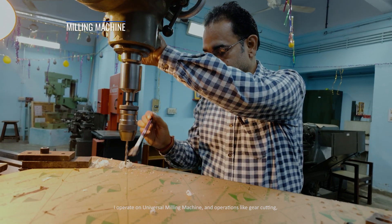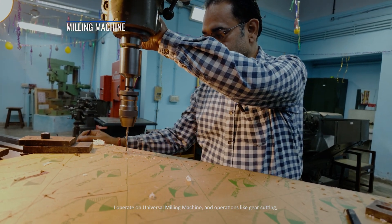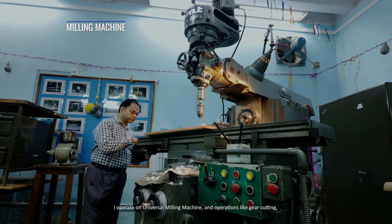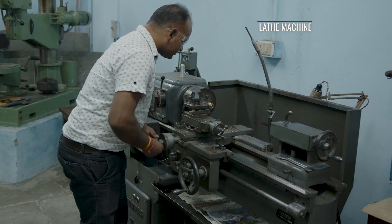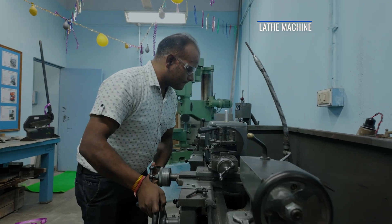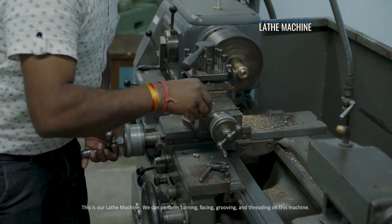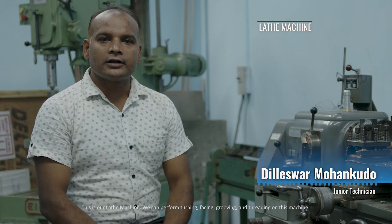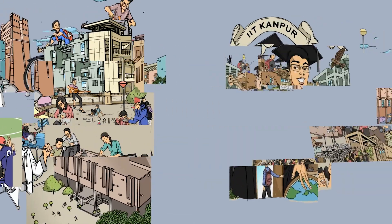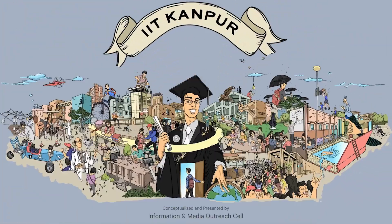I operate the universal milling machine. These machines can do gear cutting, flat cutting, and side cutting. This is our lathe machine. We can do turning, facing, grooving, knurling, and threading.